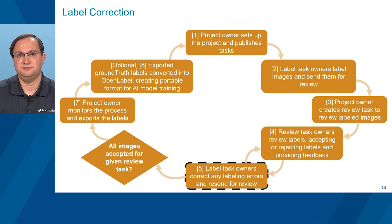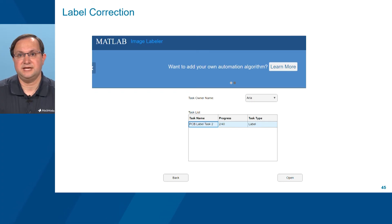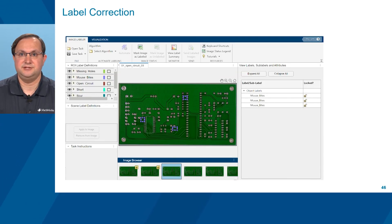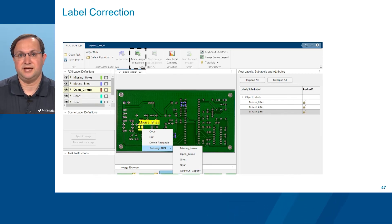After the review task owner has completed their review and sent the results, the label task owner corrects any labeling errors identified by the review task owner and resends them for review. The label task owner chooses the task owner icon and selects their profile. Their labeling environment launches and the rejected labels and images can now be corrected. The label task owner proceeds to correct the third image, in which open circuits were mistaken for mouse bites, by hovering over each ROI rectangle, right-clicking, and going through the dropdown menus to reassign the ROI as an open circuit. When finished, the label task owner marks the image as labeled using the Mark Image as Labeled icon to lock in the labels.